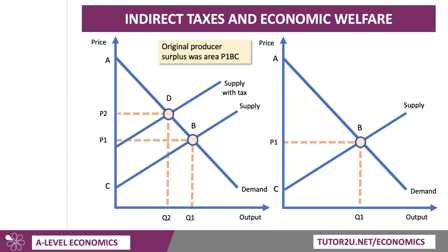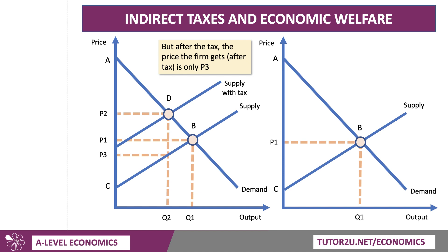The original producer surplus was the area P1, B, C — the area above the supply curve and below the price. The producer charges P2, but that's not the price the producer keeps, because the government takes the tax. So in fact the producer only gets price P3 after the tax. They're now selling quantity Q2 at a price of P3 — selling less and getting a lower price — so producer surplus must have gone down.